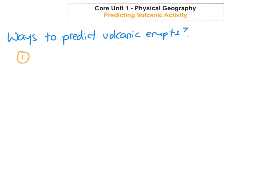The first way to predict volcanic eruptions is by observing the shape of the cone. Before any volcanic eruption, magma usually pushes into the area beneath the volcano, and as it rises into the cone it pushes outwards, creating a bulge on the side of the volcano. Scientists will try to observe and see if there are any bulges or changes in the slope of the side of the volcano, as this can indicate that an eruption is likely to happen in the near future.